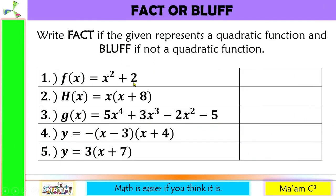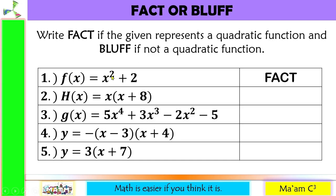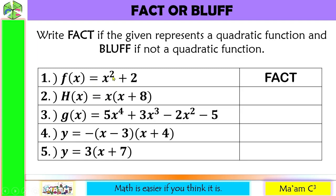Number one is a fact: we have the name of the function, an equal sign, and the exponent of our variable is 2. Number two also has a name of a function, an equal sign, and when we multiply x by x it gives us x squared, so this is also a fact.